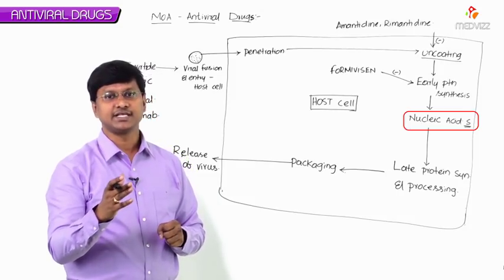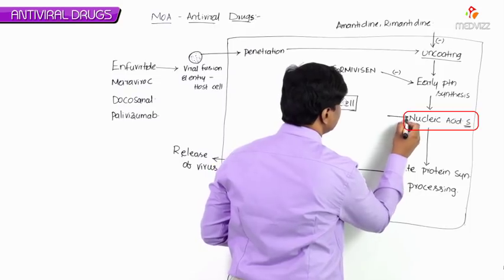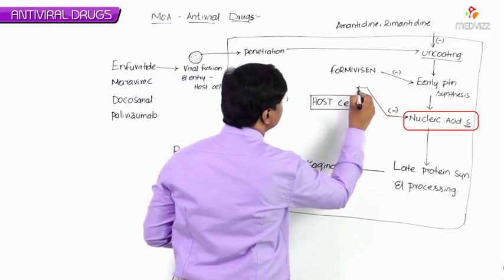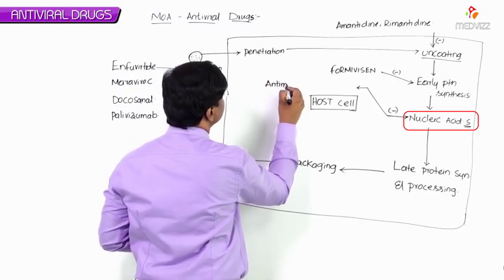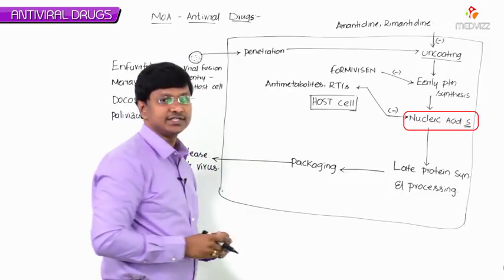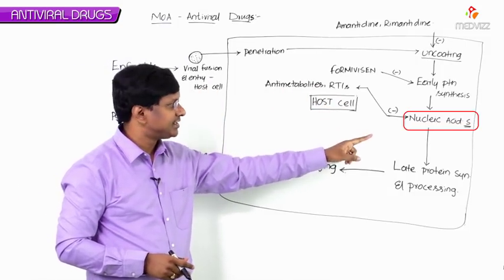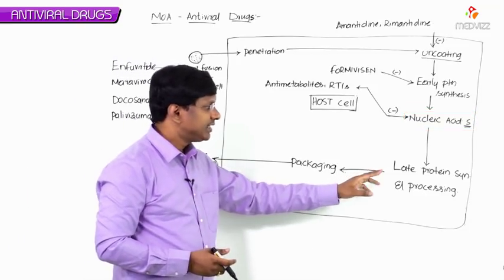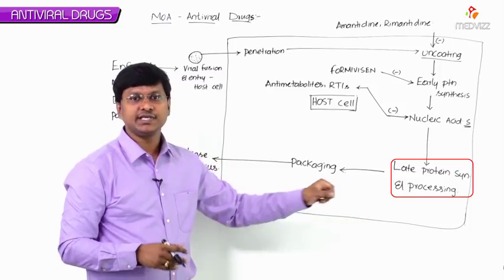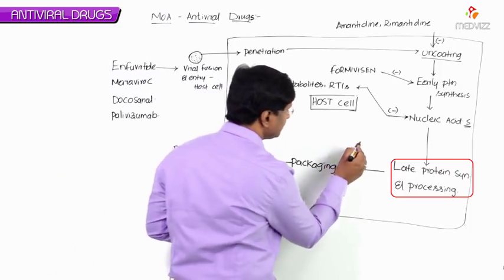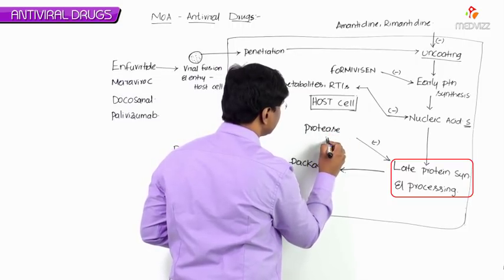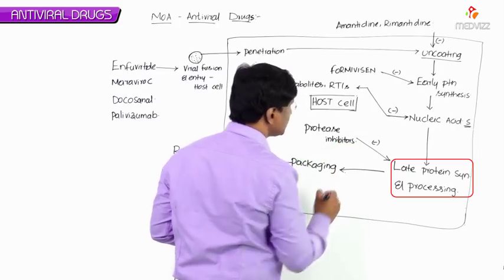Nucleic acid synthesis is inhibited by anti-metabolites and reverse transcriptase inhibitors. Following that, late protein synthesis and processing is inhibited by protease inhibitors.